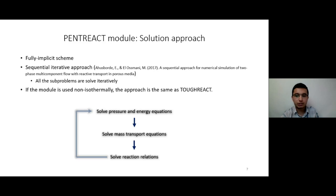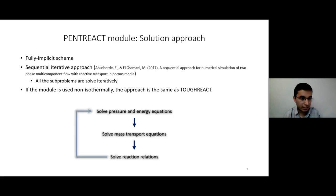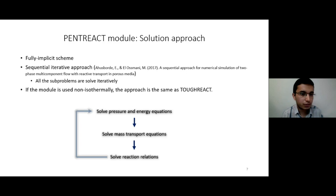Now let's talk about how these equations are solved. I used the fully implicit scheme. Some researchers might confuse this with the global implicit approach in reactive transport modeling — what I mean by fully implicit is that, as much as possible, all parameters are solved at the next time step, which is unknown. So the number of unknowns is large, and the system is very non-linear. We have to use, for example, the Newton-Raphson method to solve the system. To use the Newton-Raphson method, we need to differentiate the equations. MRST allows us to use automatic differentiation to easily differentiate the equations.